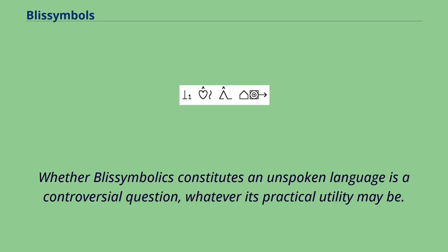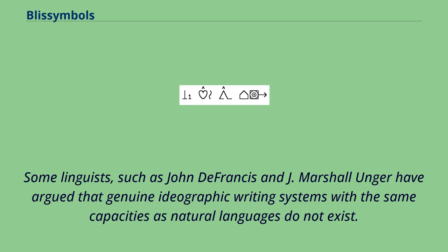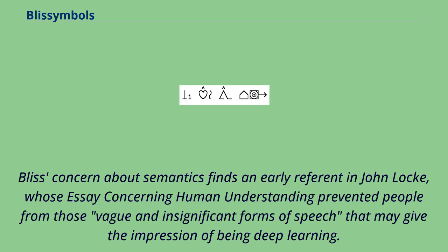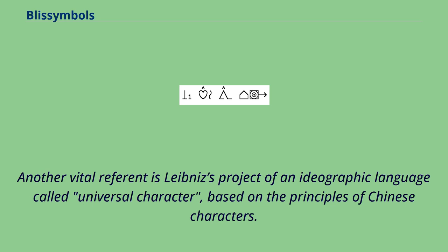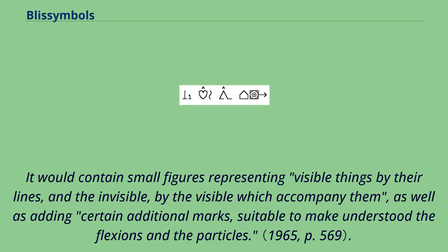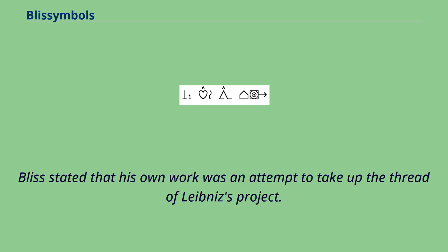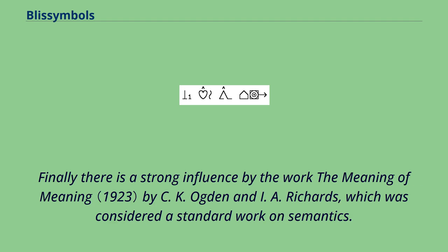Whether Bliss Symbolics constitutes an unspoken language is a controversial question, whatever its practical utility may be. Some linguists, such as John de Francis and J. Marshall Unger, have argued that genuine ideographic writing systems with the same capacities as natural languages do not exist. Bliss's concern about semantics finds an early referent in John Locke, whose essay concerning human understanding warned people about those vague and insignificant forms of speech that may give the impression of being deep learning. Another vital referent is Leibniz's project of an ideographic language called Universal Character, based on the principles of Chinese characters. It would contain small figures representing visible things by their lines, and the invisible by the visible which accompany them, as well as certain additional marks suitable to make understood the flexions and the particles. Bliss stated that his own work was an attempt to take up the thread of Leibniz's project. Finally, there is a strong influence by the work The Meaning of Meaning by C.K. Ogden and I.A. Richards, which was considered a standard work on semantics.